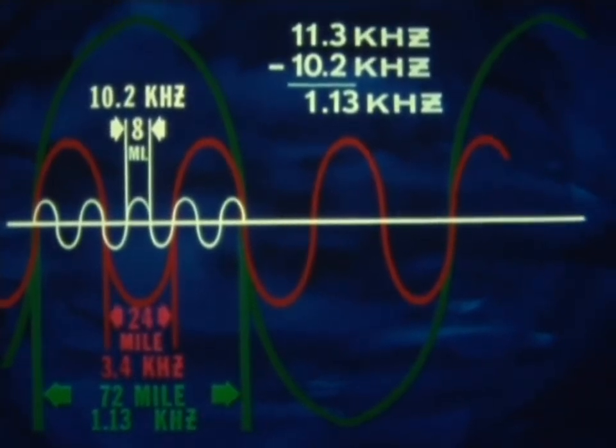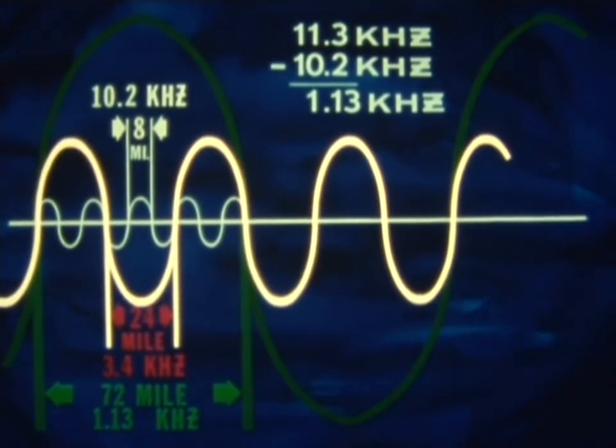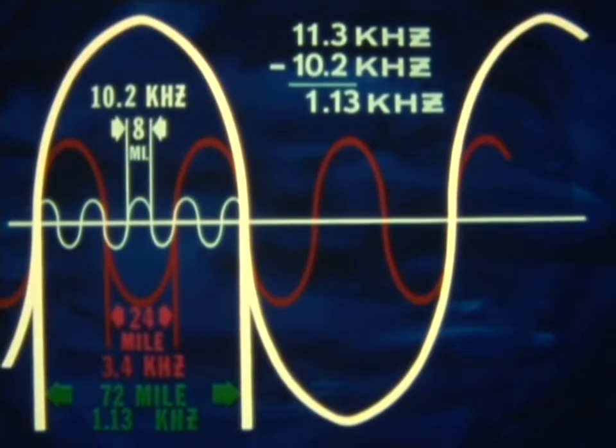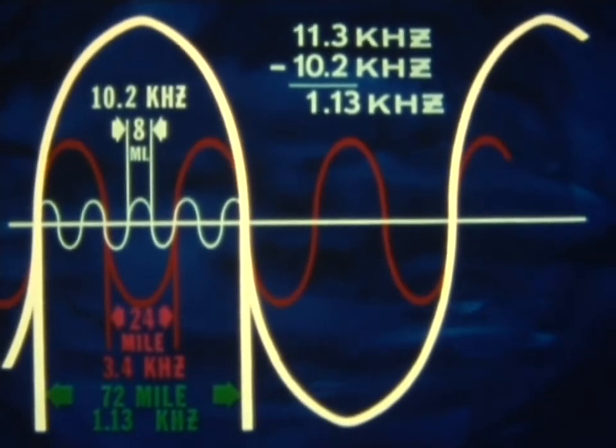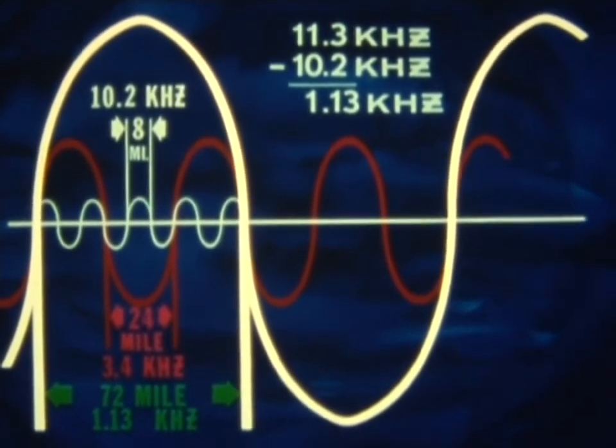In spite of the availability of the other two frequencies, the 10.2 kilohertz signal is the essential frequency needed for accurate navigation. The additional signals simply make it possible for suitably equipped receivers with the aid of dead reckoning to resolve lane ambiguity any time and anywhere on the globe.